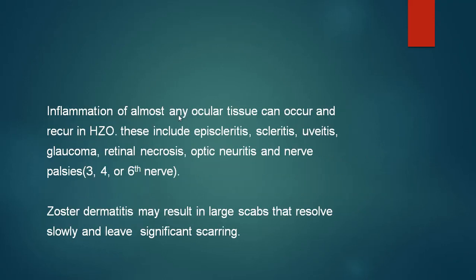Inflammation of almost any ocular tissue can occur and recur in herpes zoster ophthalmicus, including episcleritis, scleritis, uveitis, glaucoma, retinal necrosis, optic neuritis and nerve palsies involving the third, fourth or sixth cranial nerve. The zoster dermatitis, which may be very severe, may result in large scabs that resolve slowly and may leave significant scarring.